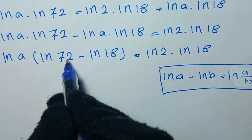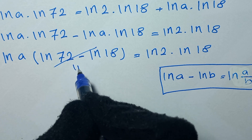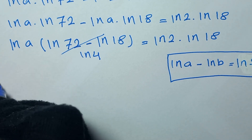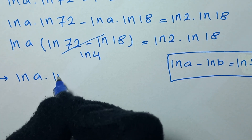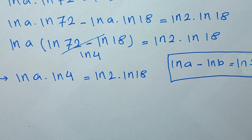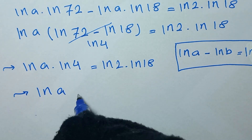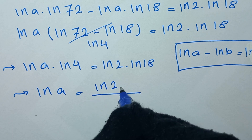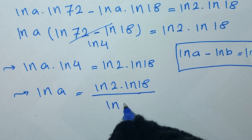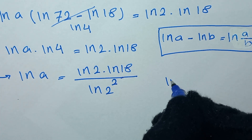So ln of 72 minus ln of 18 becomes ln of 72 over 18, which is ln of 4, since 72 over 18 equals 4. So we have ln of a times ln of 4 is equal to ln of 2 times ln of 18. We then divide both sides by ln of 4, giving ln of a equals ln of 2 times ln of 18 over ln of 4. We can write ln of 4 as ln of 2 to the power of 2.